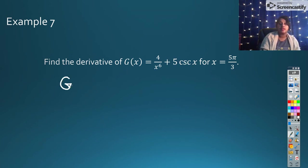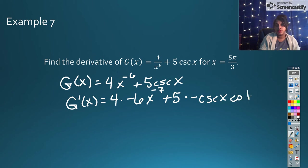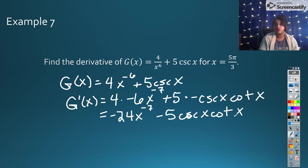So I'm going to rewrite this into something that looks a little prettier to me. So I'm going to keep that constant, but I'm going to bring my x to the 6 from the denominator to the numerator so that I can recognize it for the power rule that it is. So now if I do g prime, I'm going to know that that's 4 times negative 6x to the negative 6 minus 1, so that's negative 7, plus 5 times the derivative of cosecant, which is negative cosecant x cotangent x. So if I simplify this down, that becomes negative 24x to the negative 7th minus 5 cosecant x cotangent x.